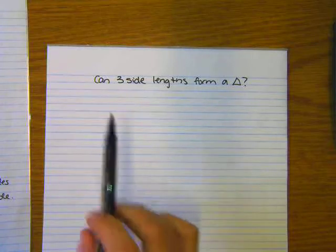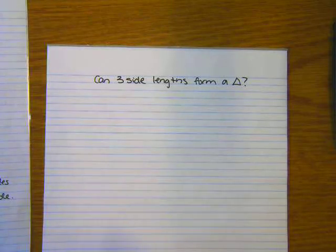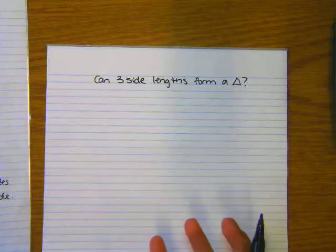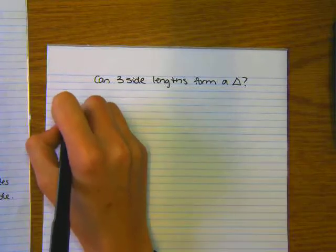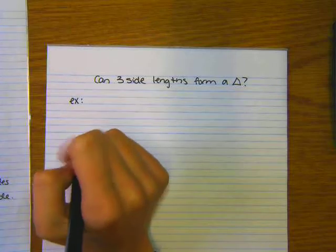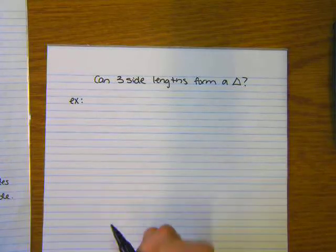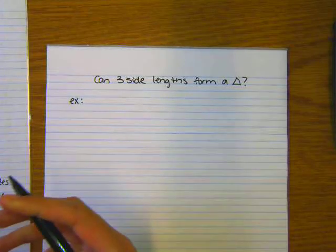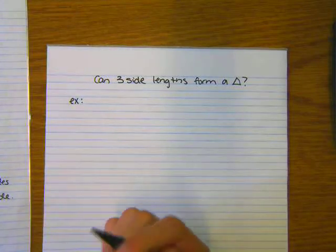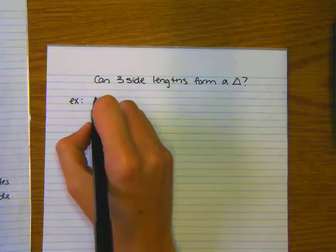We want to be able to answer the question, can the three side lengths form a triangle? So you will be given three side lengths and you will be asked, do these three sides form a triangle? And in order to form a triangle, the two smaller sides of that triangle must add up and equal more than the third side.